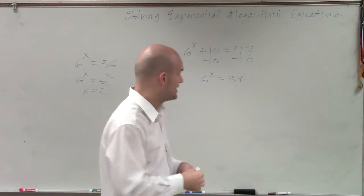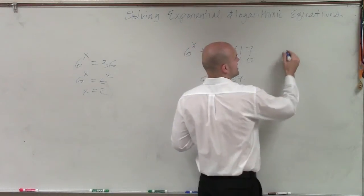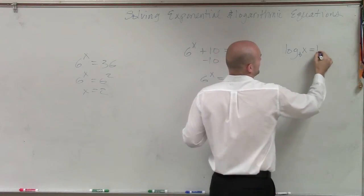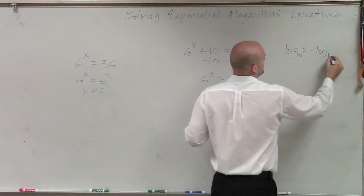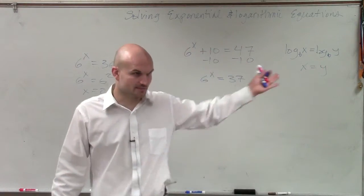So what we have to do is go back to our brain and remember our logarithmic properties. So a logarithmic property says if I take log base b of x, that's going to be equal to log base b of y, then x equals y. That's a property we talked about.